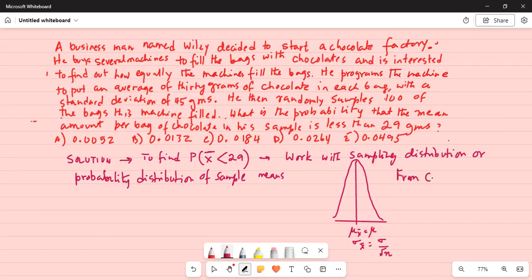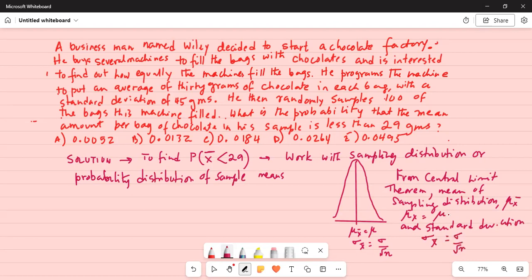So from central limit theorem, the mean of sampling distribution which is μ x̄ is equal to μ, and standard deviation σ x̄ is equal to σ by square root of n. μ is the mean of the population and σ is the standard deviation divided by square root of sample size.